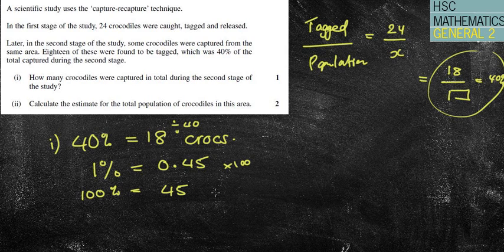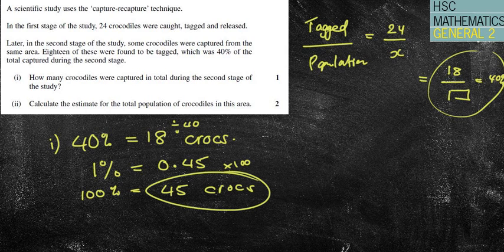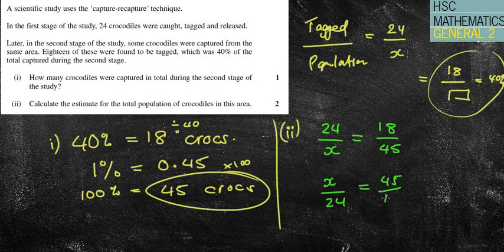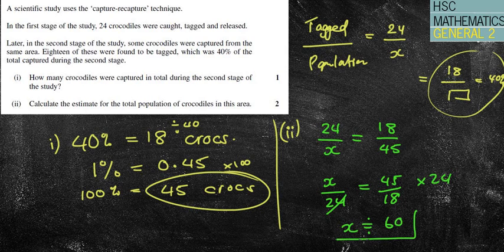So by using my unitary method, I've found that I actually had 45 crocs, which means that when I'm doing my part 2, and I'm going to guess that they're going to ask me for the population, which they do ask me that, we've got 24 over X, that's my original 24 that I tagged out of the whole population, equals 18 out of the 45 crocs that I now know. I'm now going to invert it, X over 24 equals 45 over 18, and then times it by 24. So 45 divided by 18, and I'm going to times my answer by 24 to get an approximate value of 60 crocodiles in my reservoir.